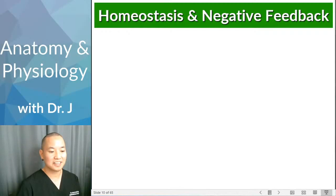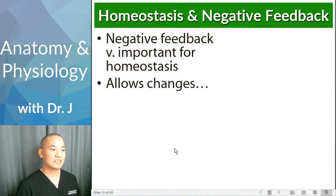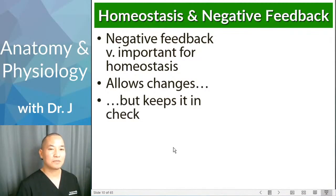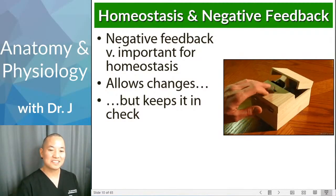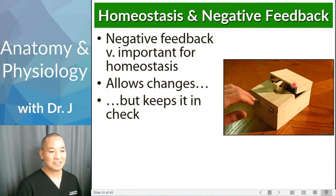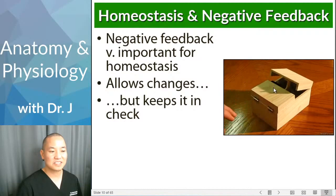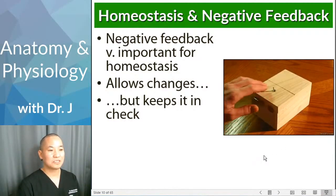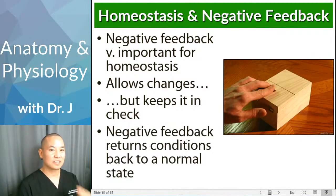Negative feedback in physiology is not like online criticism — it's very important for homeostasis. In negative feedback, A causes B, but B inhibits A. Think of a 'useless box': a person flips a switch, activating motors and gears inside the box, but that causes an arm to extend and turn itself back off. By turning on the switch, you activate changes that eventually shut themselves off — that's a negative feedback loop.